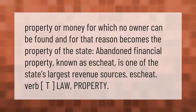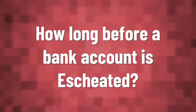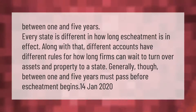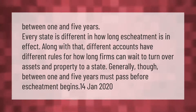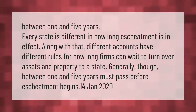Between one and five years — every state is different in how long escheatment is in effect. Along with that, different accounts have different rules for how long firms can wait to turn over assets and property to a state. Generally, between one and five years must pass before escheatment begins.